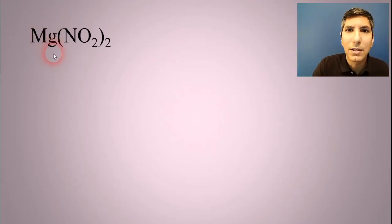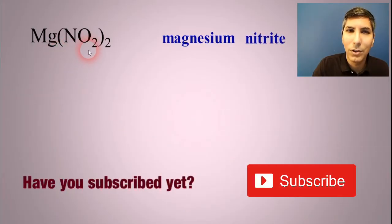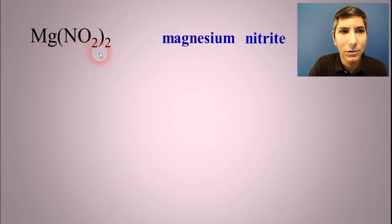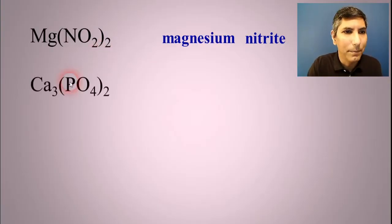And Mg, of course, is magnesium. And then NO2 is called nitrite. So you have to know those names and formulas from the ion chart. We don't do anything with that other two. We don't say dinitrite or anything like that. It's just magnesium nitrite. Most of the time, this is pretty straightforward and simple.